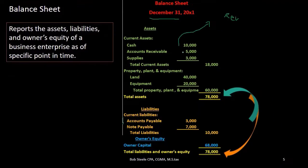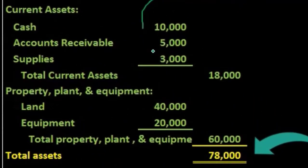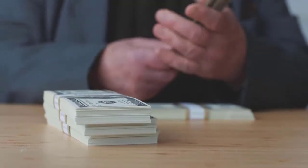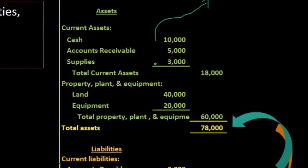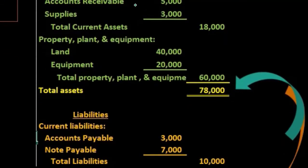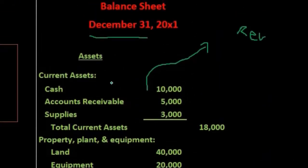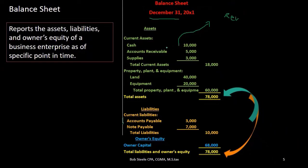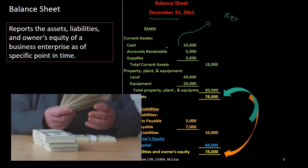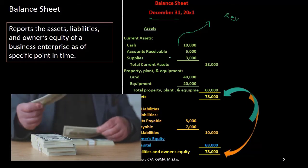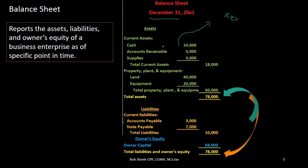Beyond cash, we have accounts receivable, supplies, and other common current assets — all things we will use or consume in the future to help generate revenue. Accounts receivable is what is owed to the company from customers. Supplies are assets we expect to consume soon. Assets are typically broken out between current assets and property, plant, and equipment — current assets being more liquid and used relatively soon.